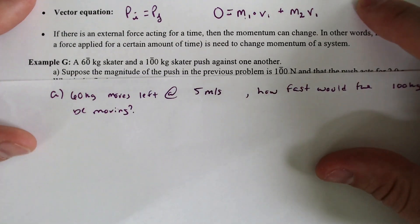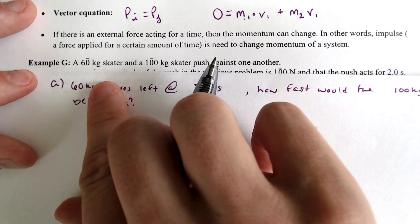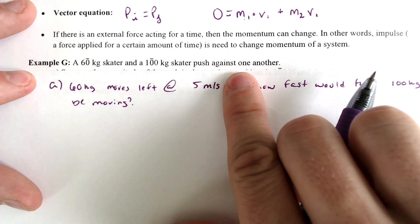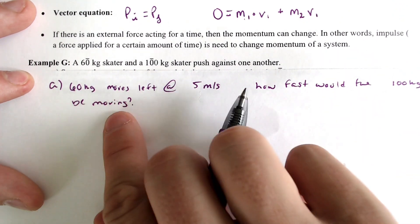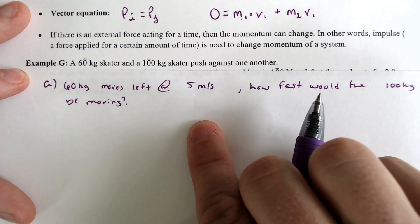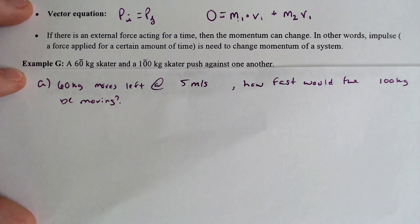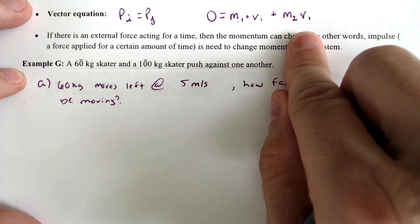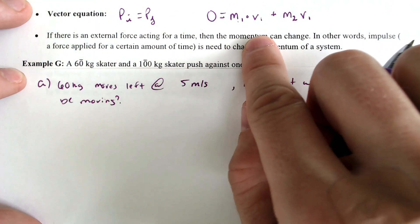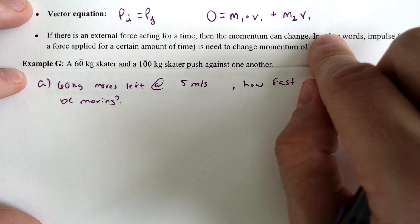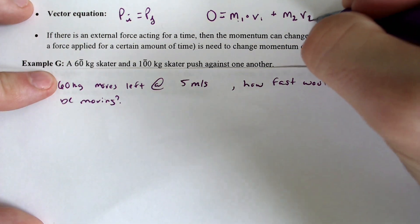So we're going to do a few examples real quick. We got a 60-kilogram skater and a 100-kilogram skater push against one another. The 60-kilogram skater moves to the left at five meters per second. How fast would the 100-kilogram skater be moving? Let's use the formula right here that we just wrote down. Zero equals mass times V1 plus mass two times V2.